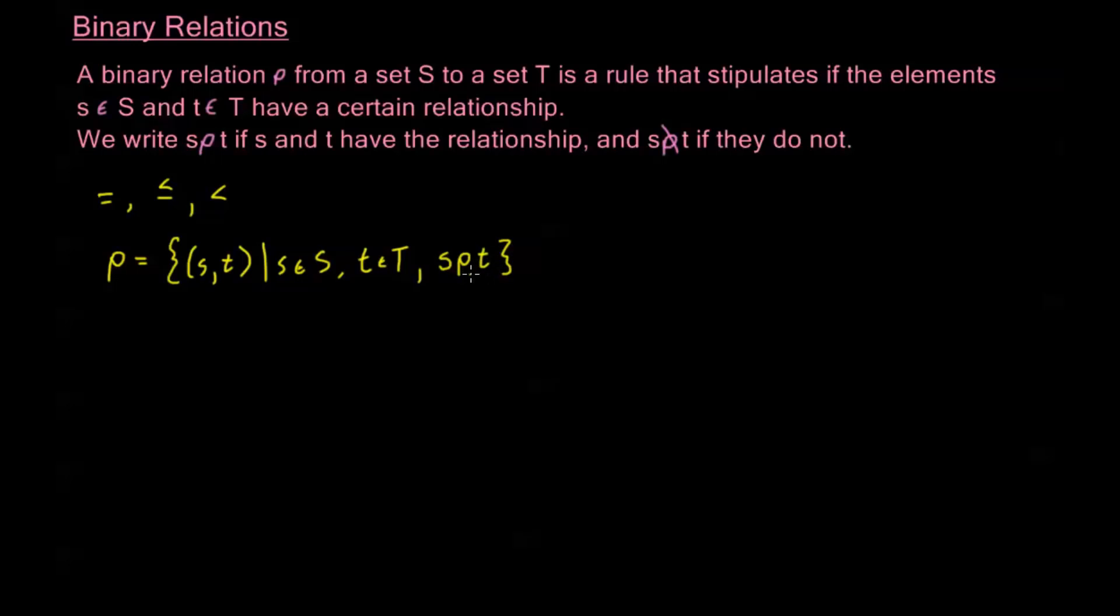This just means that the relationship ρ is satisfied by s and t, or s ρ t is true. Now we notice right away that this is going to be a subset of our Cartesian product S×T.